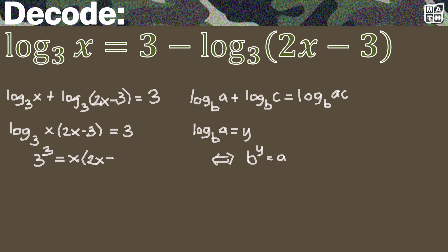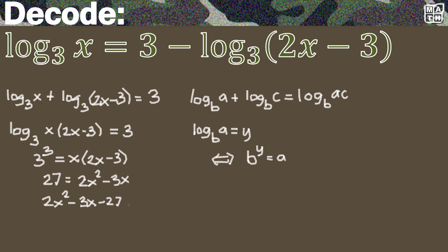This is the transformation of a logarithmic equation into an exponential equation. Simplifying, we have 27 equals 2x squared minus 3x by the distributive property. We are expecting a quadratic equation. Moving 27 to the other side by the symmetric property, we get 2x squared minus 3x minus 27 equals 0.